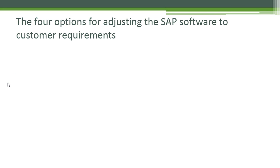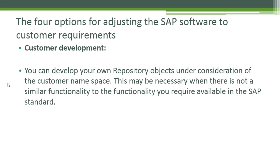The four options for adjusting SAP software to customer requirements. First, customer development: you can develop your own repository objects under the customer namespace. This may be necessary when there is no similar functionality available in the SAP standard. You create objects in transaction SE80, the Object Navigator.